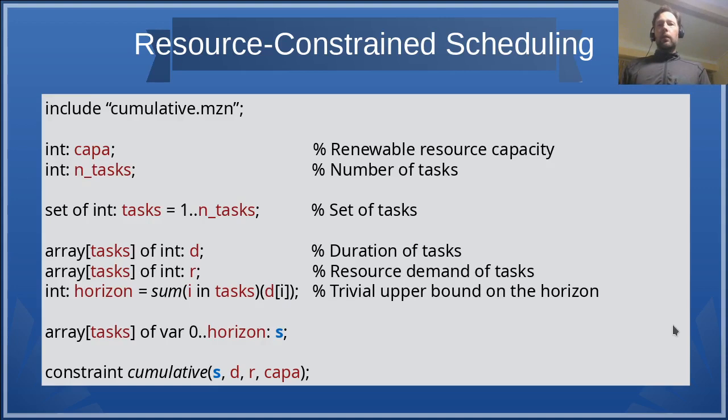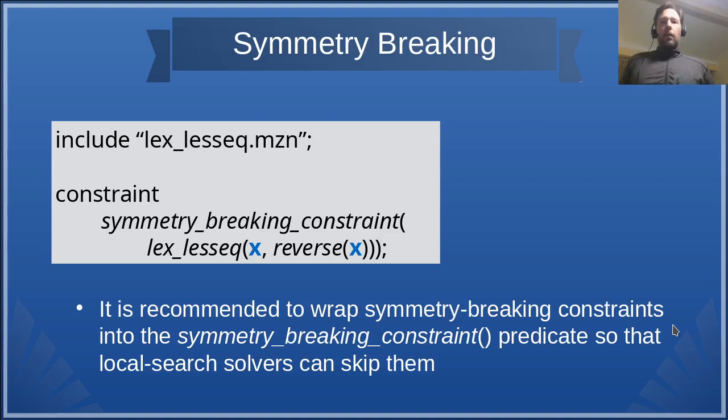Resource constraint scheduling. Imagine a renewable resource like electricity. At any point in time you have a certain limit on electricity consumed. The cumulative constraint operates on a set of tasks with variable start time, with certain durations and resource demands.